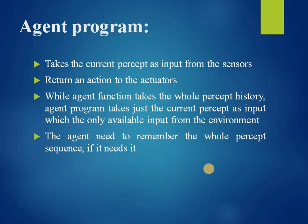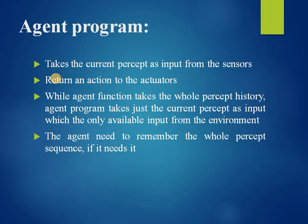Agent programs take the current percept as input from the sensors and return an action to the actuators. There is a difference between the agent function and the agent program: the agent program takes only the current percept as input, but the agent function takes the entire percept history as input. The agent program depends only on the current percept, while the agent function depends on previous percepts as well.